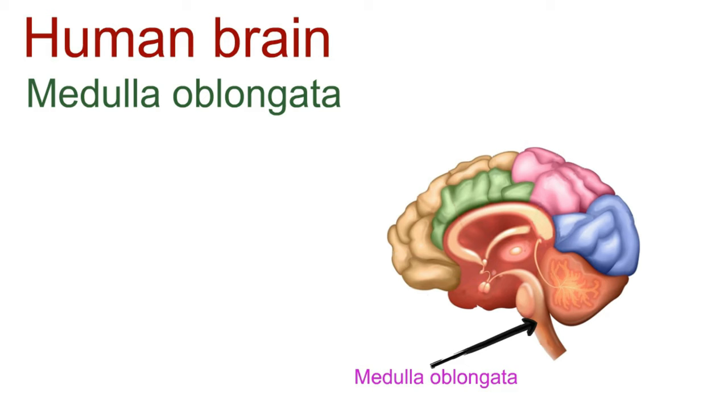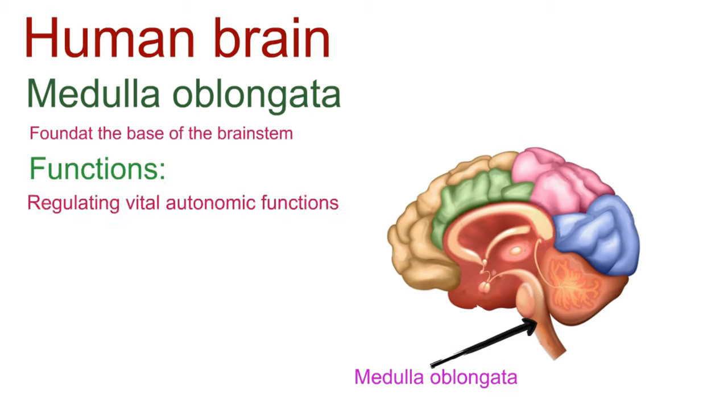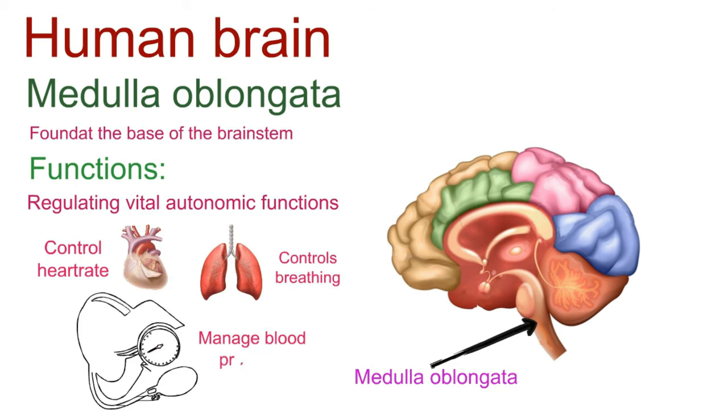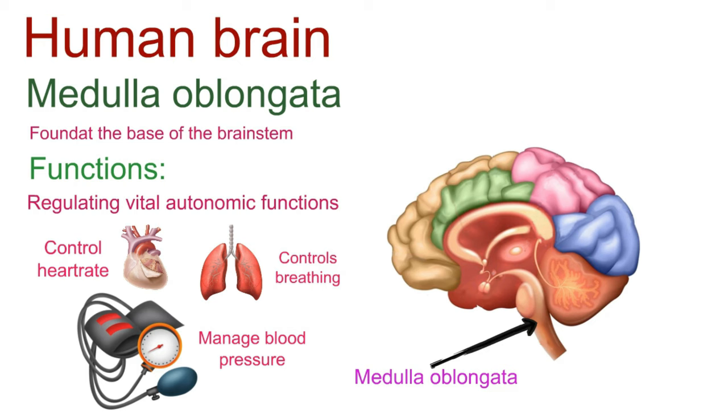Our first stop is the medulla oblongata, nestled at the base of the brain stem. It's the unsung hero, regulating vital autonomic functions that keep us alive. Here, the medulla oversees the rhythm of our heartbeat, controls our breathing, and manages blood pressure.